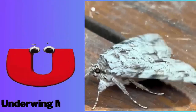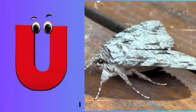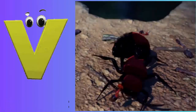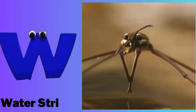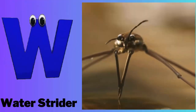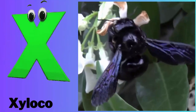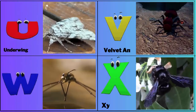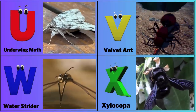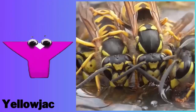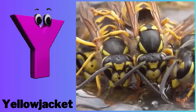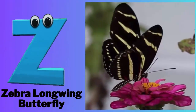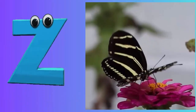U - U for underwing moth. V - V for velvet ant. W - W for water strider. X - X for xylacopa. Y - Y for yellow jacket. Z - Z for zebra longwing butterfly.